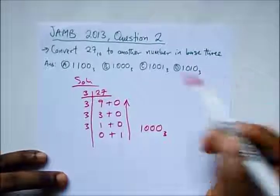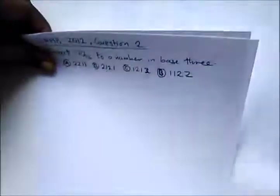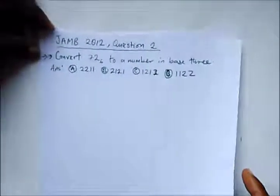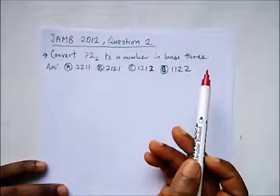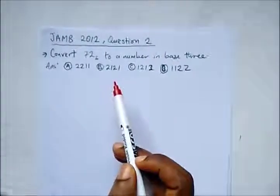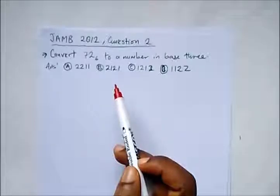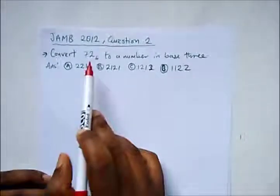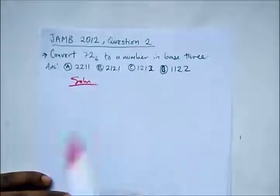Our final question says convert 72 base 6 to a number in base 3. This is not from base 10 to another base; this is from a base to another base. To do this, we'll first convert 72 base 6 to base 10, then from base 10 we'll convert to base 3.